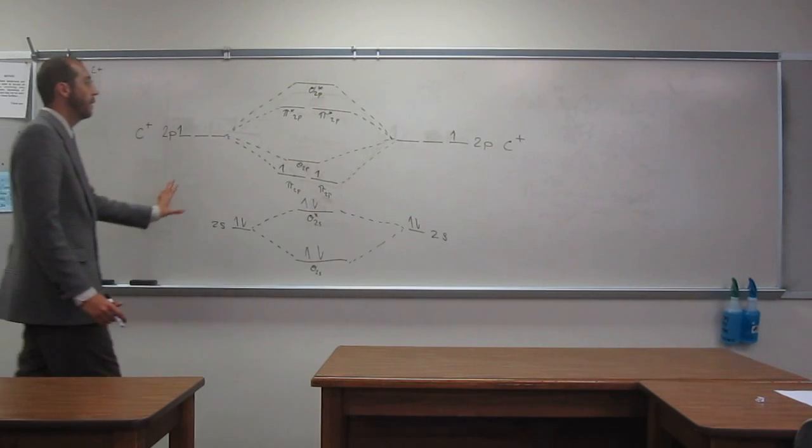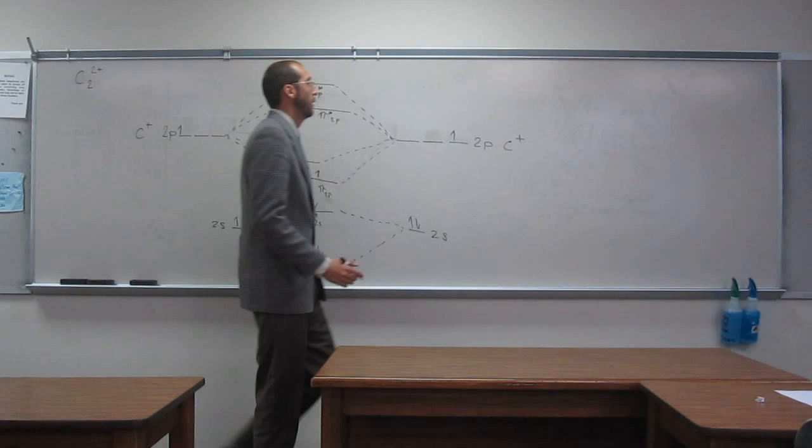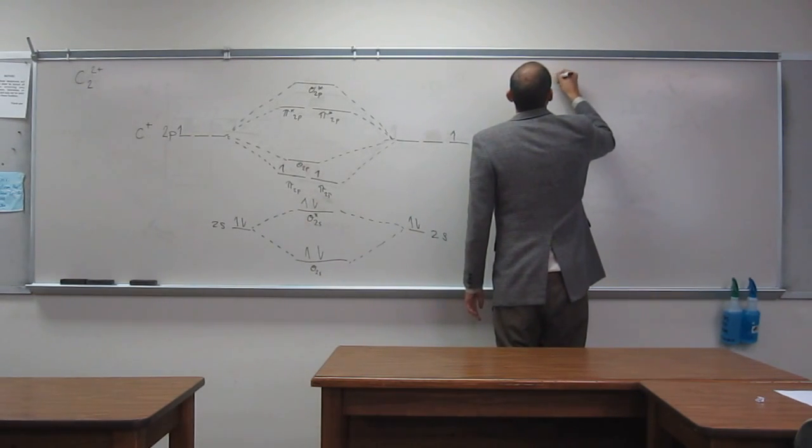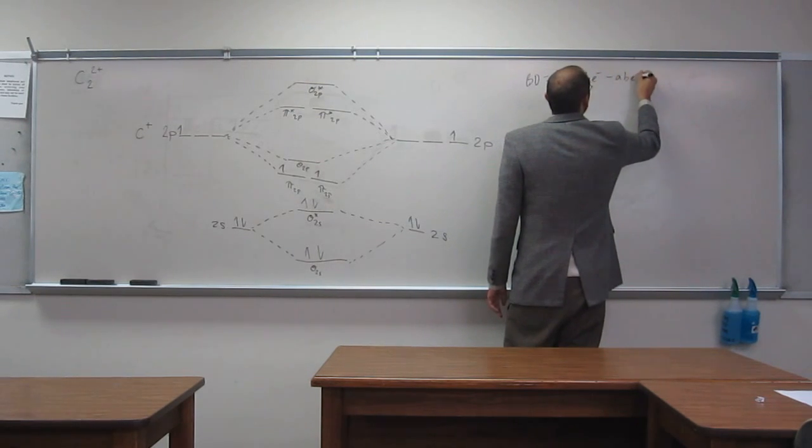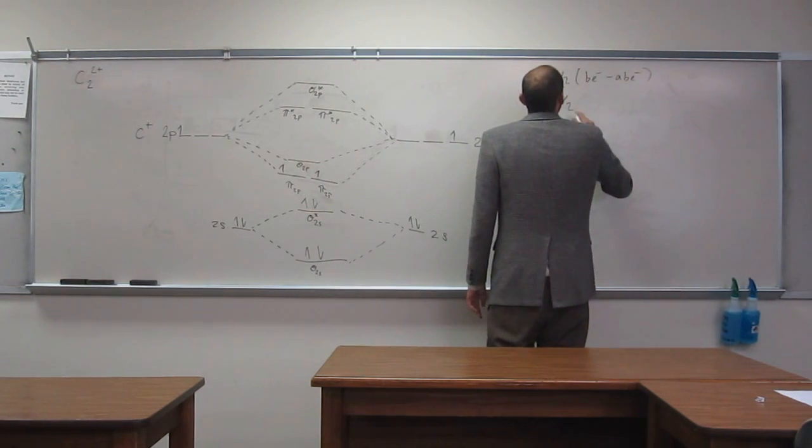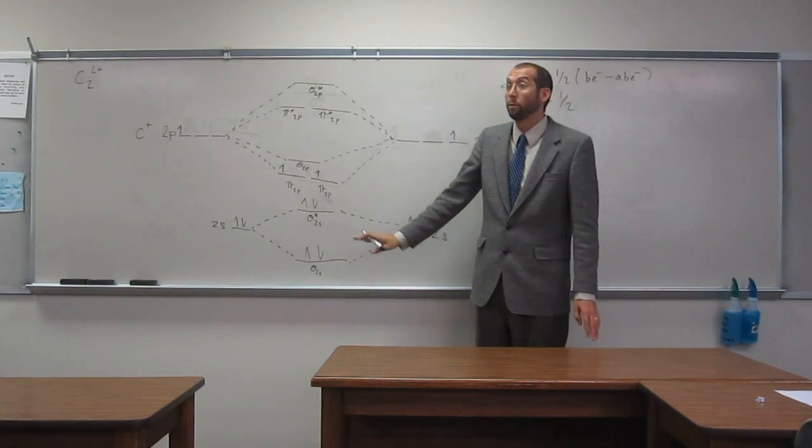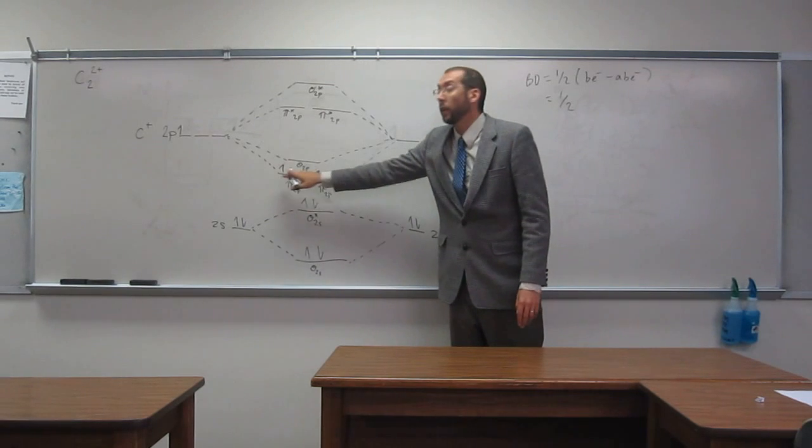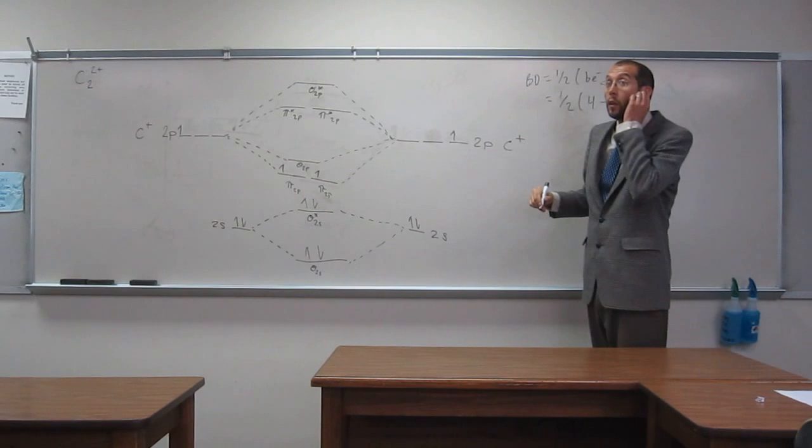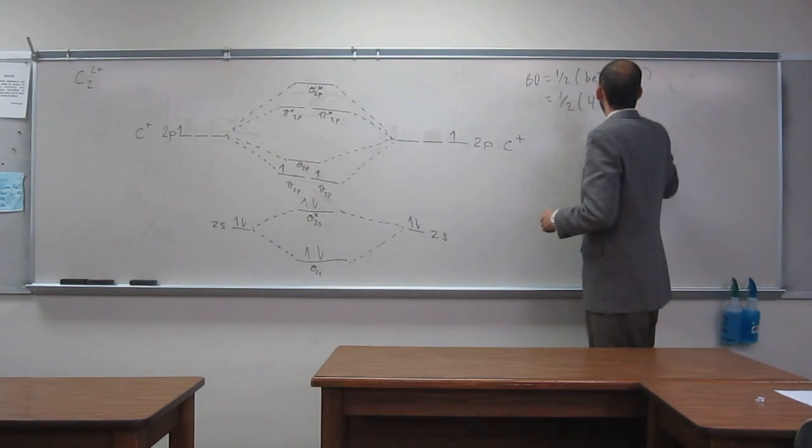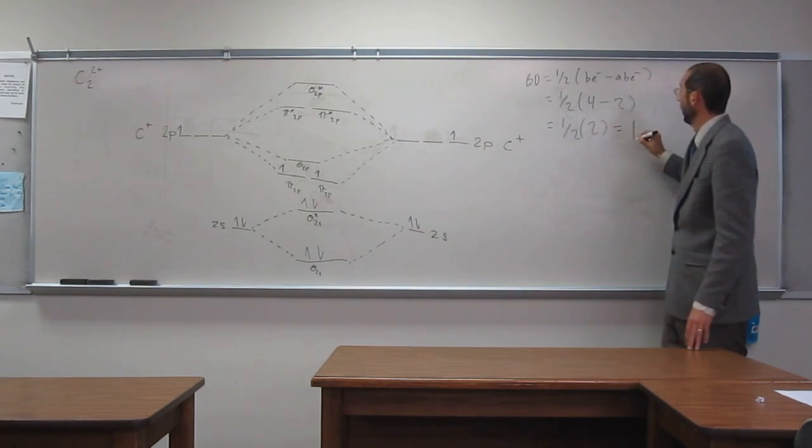So now, let's go about determining the bond order, okay? So bond order is going to equal one-half bonding electrons minus the anti-bonding electrons. So how many bonding electrons do we have? Help me out. Four, right? One, two, three, four. How many anti-bonding do we have? Two. So, one-half, four minus two is two, so that's going to equal what? One.